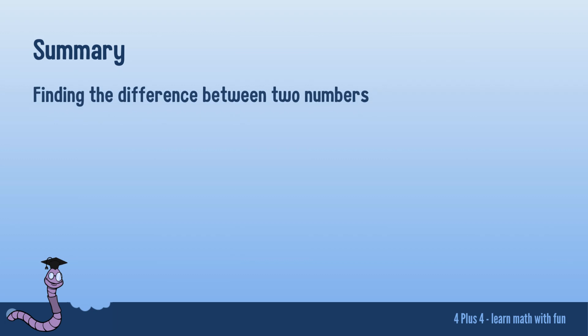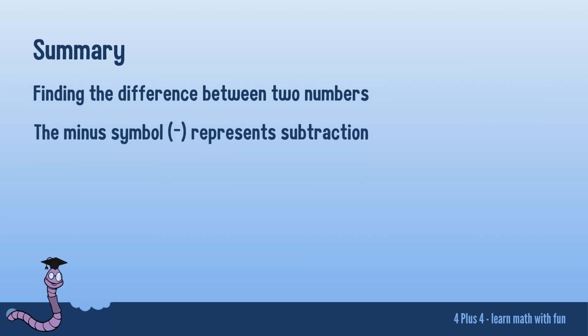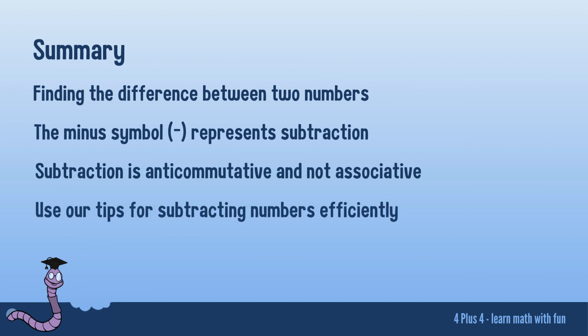Subtraction is about finding the difference between two numbers and is represented by the minus symbol. But subtraction isn't merely about subtracting numbers—it's a world of captivating properties. Anti-commutativity reminds us of the importance of order, while non-associativity highlights the impact of grouping. As you venture into subtraction, remember these properties and follow our tips to become a subtraction master.